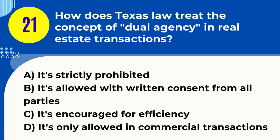Question 21. How does Texas law treat the concept of dual agency in real estate transactions? A. It's strictly prohibited. B. It's allowed with written consent from all parties. C. It's encouraged for efficiency. D. It's only allowed in commercial transactions. Answer: B. It's allowed with written consent from all parties. Explanation: Texas law allows dual agency in real estate transactions, but it requires the written consent of all parties involved, ensuring full disclosure and agreement.